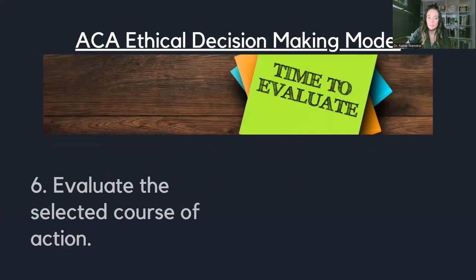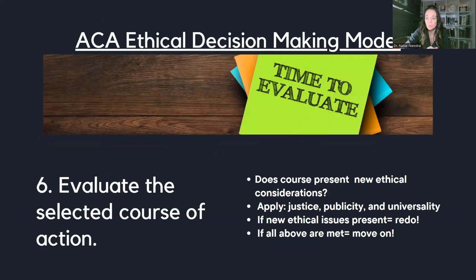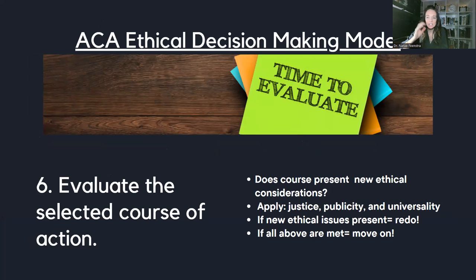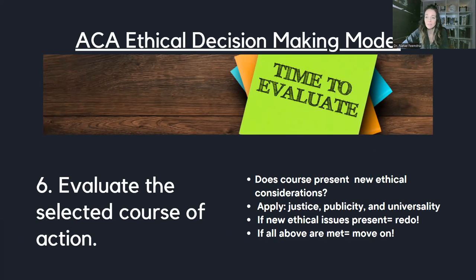When you have done that, you move on to step six: evaluating your course of action. Think to yourself — are there other ethical dilemmas that come up with the scenario you've landed on? Apply justice, publicity, and universality: Is this doing justice? If it was publicly announced, are you okay with it? And would you apply this to any client in this scenario? If you see another ethical dilemma pop up, go right back through the steps from the beginning. If not, that's your cue to move forward.